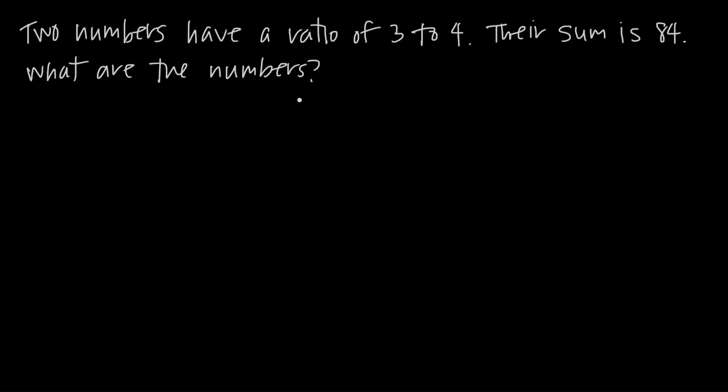So find the two mystery numbers. What we have to do is convert this information into a couple of equations and then use those as a system of equations to solve for the numbers.